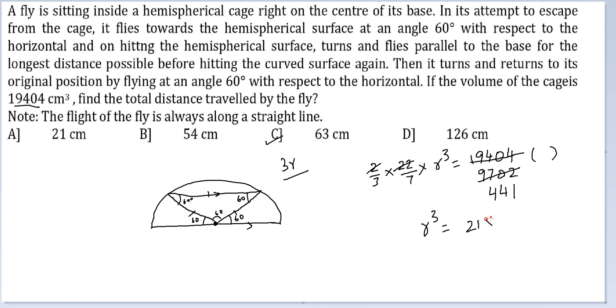R cubed is equal to 21 into 21 into 21. So R should be equal to 21. The radius turns out to be 21. We finally needed the distance travelled by the fly. This is 3R. So the answer should be option C, 63.